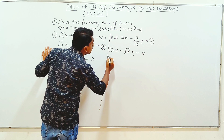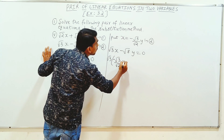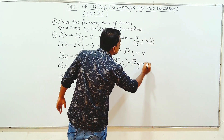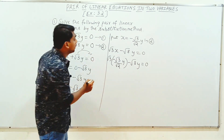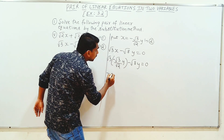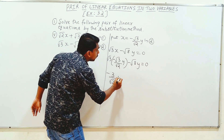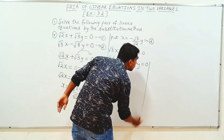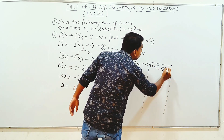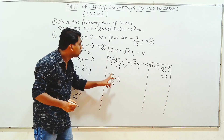x is left-sided. Root 3 into minus root 3 by root 2y, minus root 8y is equal to 0. Here, plus into minus gives minus. Root 3 into root 3y gives minus root 3·root 3y.